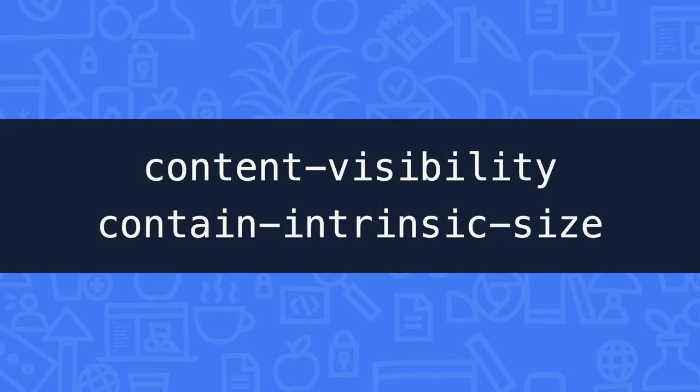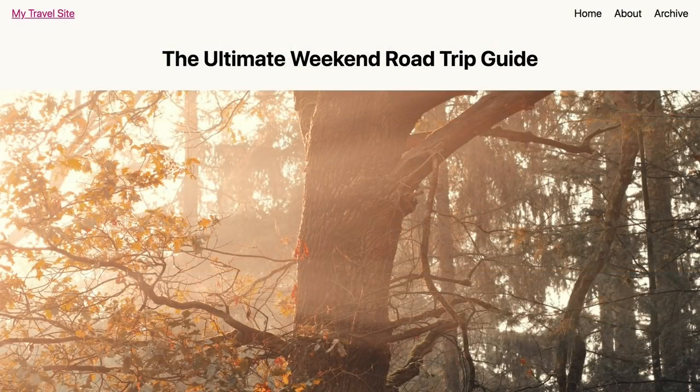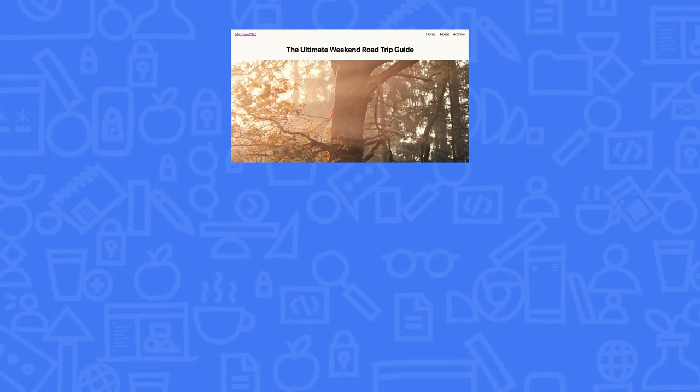First up are the CSS properties content-visibility and contain-intrinsic-size. When you load a page, the browser tries to be smart about how much it paints. For example, it won't put effort into drawing things that are way outside the viewport until you scroll towards it. However, the browser has to do a lot of layout work to figure out what's inside the viewport and what isn't. This is because an element may be at the very end of the document but positioned at the top, or some deeply nested element could be positioned outside all of its parents — these are things that CSS just lets you do.